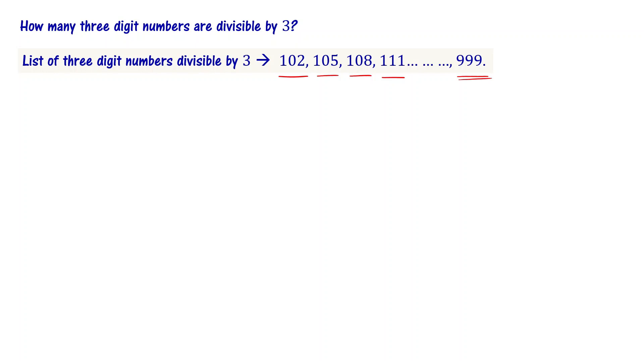You can definitely check these terms. This forms an arithmetic progression. First, the first term is a or a₁ equal to 102.